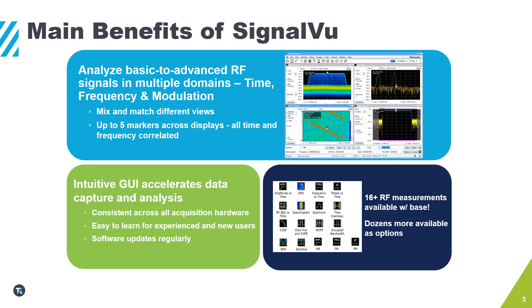Second, built upon 20 years of R&D innovation, SignalView features an intuitive user interface that accelerates the process of data capture and analysis. It offers a consistent look and feel across all supported acquisition hardware and is easy to learn for both experienced and new users with regular software updates. And third, unlike other vector signal analysis software that may nickel and dime you for each feature, SignalView offers 16 or more RF measurements standard with the base version. Some of the standard measurement displays include spectrum displays, spectrograms, RF first time displays, channel power, occupied bandwidth, spectral emission mask test, spurious analysis displays, CCDF, MCPR, as well as amplitude, frequency, and phase modulation analysis displays. In addition, the base version of SignalView is free to download and use on either a Windows PC or instrument for offline analysis of waveforms captured by all Tektronix spectrum analyzers and oscilloscopes.